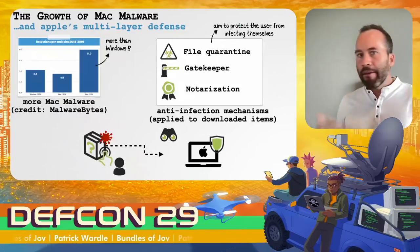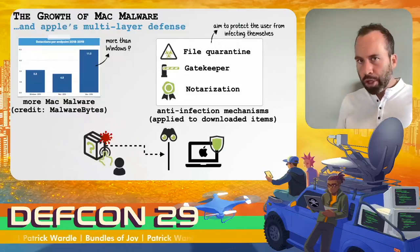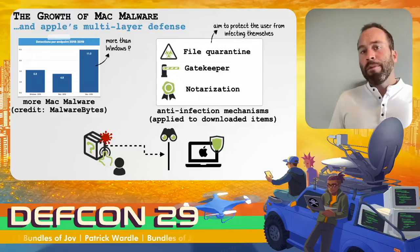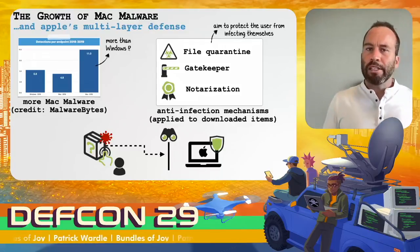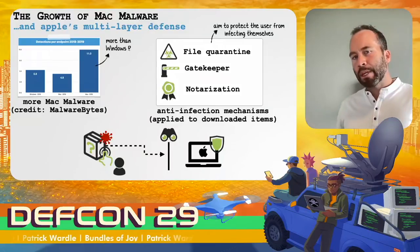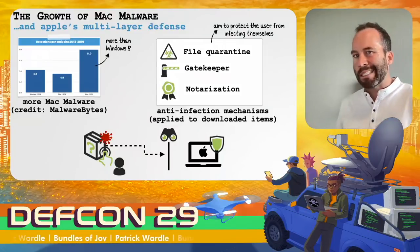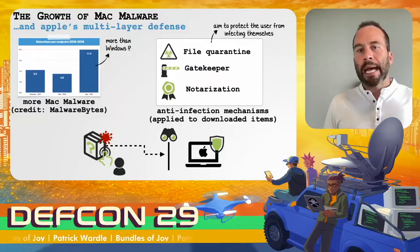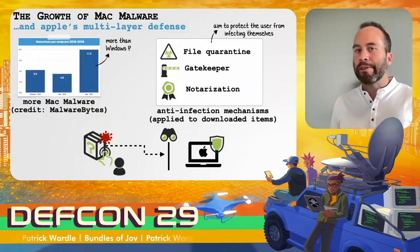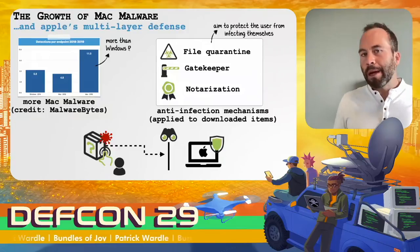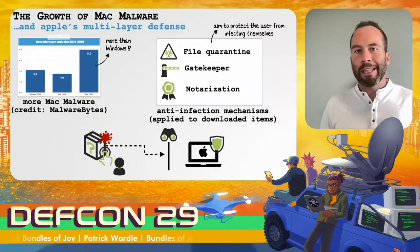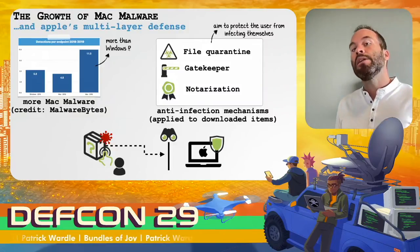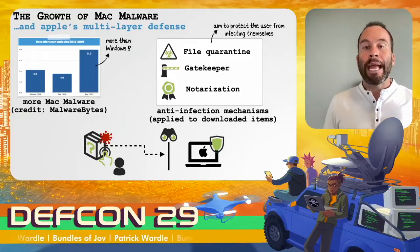As Macs become ever more popular, so do these attacks — there is just more Mac malware and adware than ever. Apple rightfully realized that the majority of ways Macs were getting infected was via user-assisted, user-interaction-based attacks. They decided they needed to do something to protect users from themselves. So we're briefly going to look at three anti-infection mechanisms: file quarantine, gatekeeper, and notarization requirements.